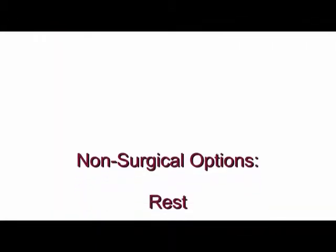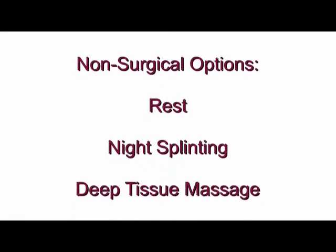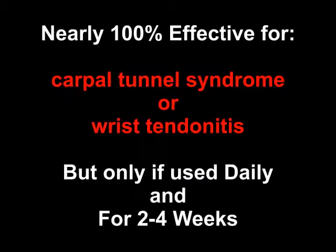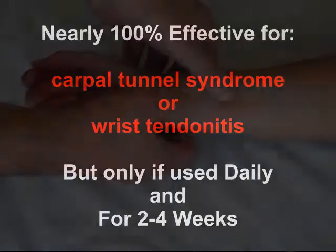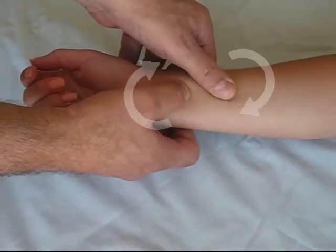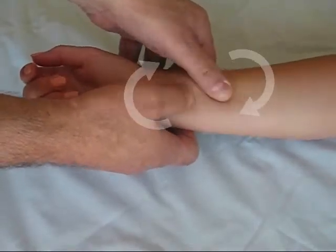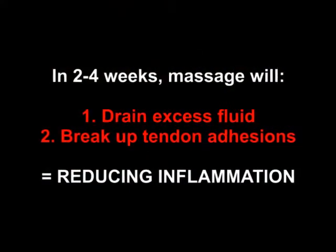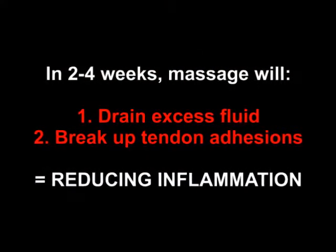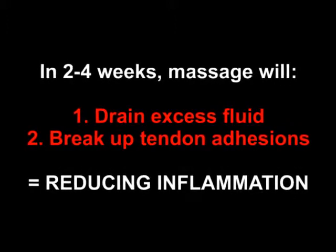Those non-surgical therapy options are rest, night splinting, and deep tissue massage — and you should do them whether you have carpal tunnel syndrome or wrist tendonitis. Deep tissue massage is nearly 100% effective in relieving carpal tunnel syndrome or wrist tendonitis, but only if it's done daily and for two to four weeks. This isn't your everyday massage — it requires specific motions on the wrist and forearm that over time will drain excess fluid and break up adhesions over the flexor tendons, thereby reducing inflammation.